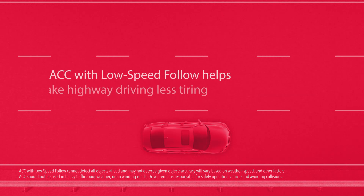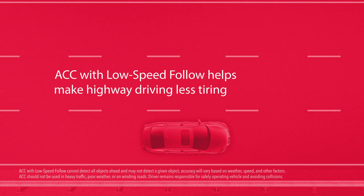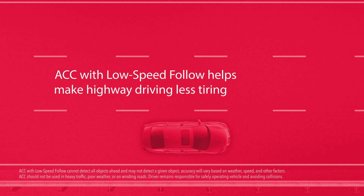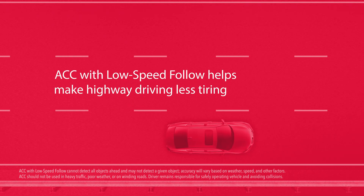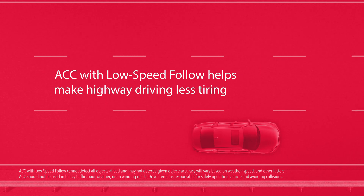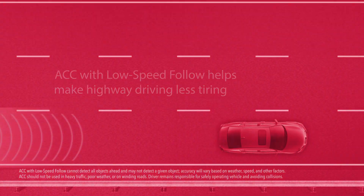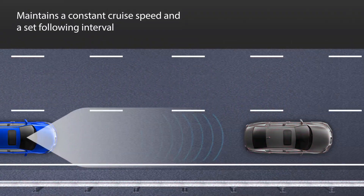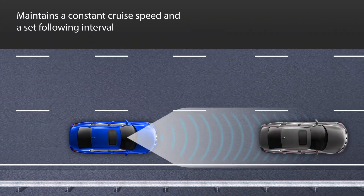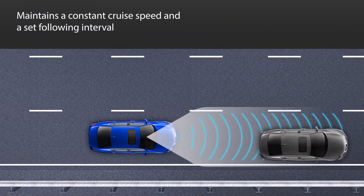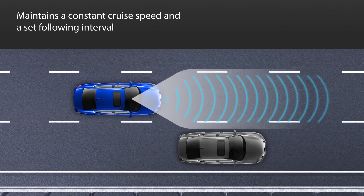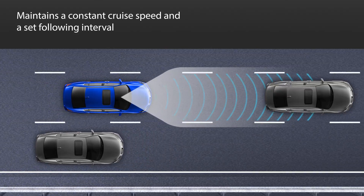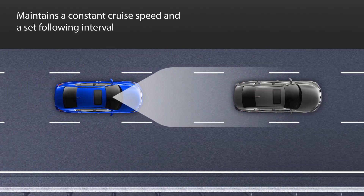Adaptive cruise control with low speed follow helps make it easier and less tiring to drive on the highway. This system is designed to maintain a constant cruise speed as well as a set following interval when it approaches a detected vehicle ahead.